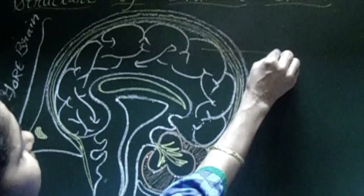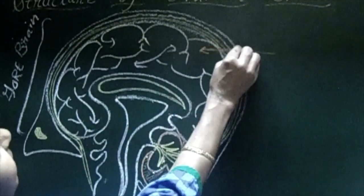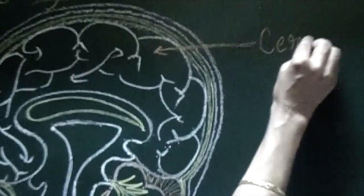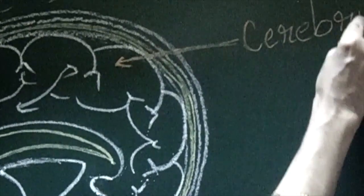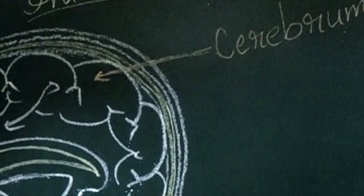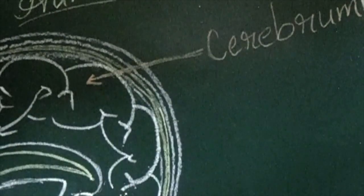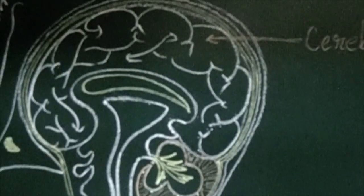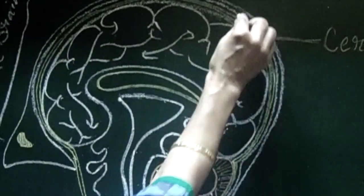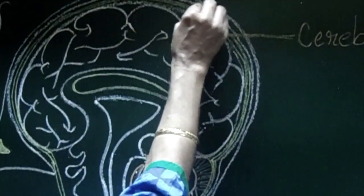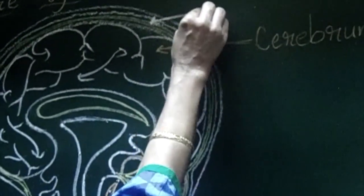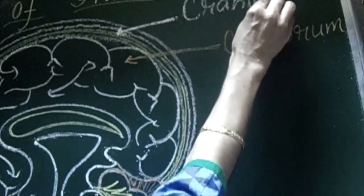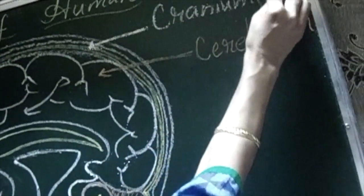Cerebrum, the largest part of human brain. And then this human brain is protected by a protective layer and that protective layer we call it as cranium or skull.